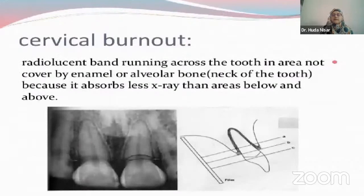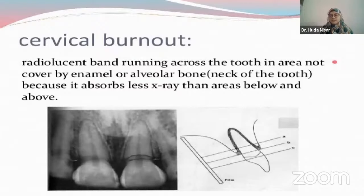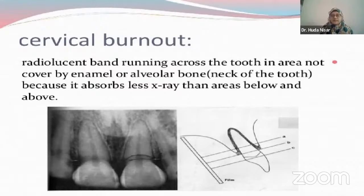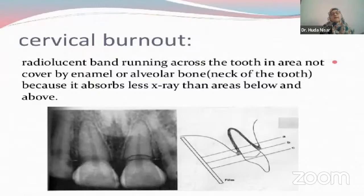Cervical burnouts occur because the root and the crown both absorb more radiation, so they appear more radiopaque, making the cervical area look radiolucent — and this could be misinterpreted, especially when a vital tooth has a crown. You could observe this in your clinics where the patient comes with pain, you take an OPG and see a significant radiolucency. This is because the crown is made of metal and is very radiopaque, absorbing most of the radiation, rendering the cervical area radiolucent — which appears pathologic but is not.